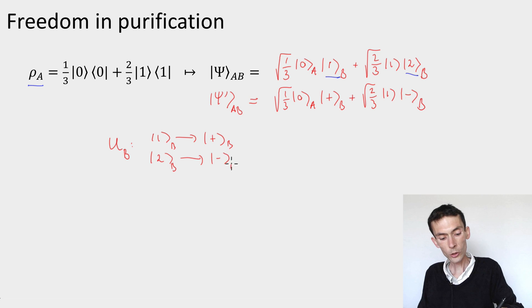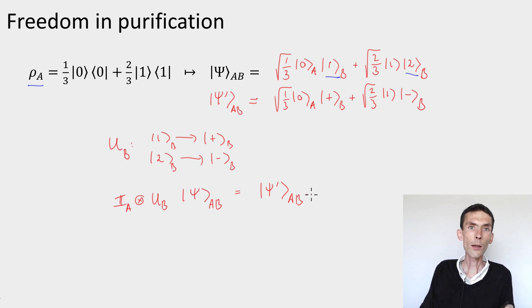This is a unitary transformation such that if I consider the identity on A, tensored with this unitary on B, and I apply this to ψ_AB, then I recover ψ'_AB. So this is the freedom that you have in choosing a purification of a given state.